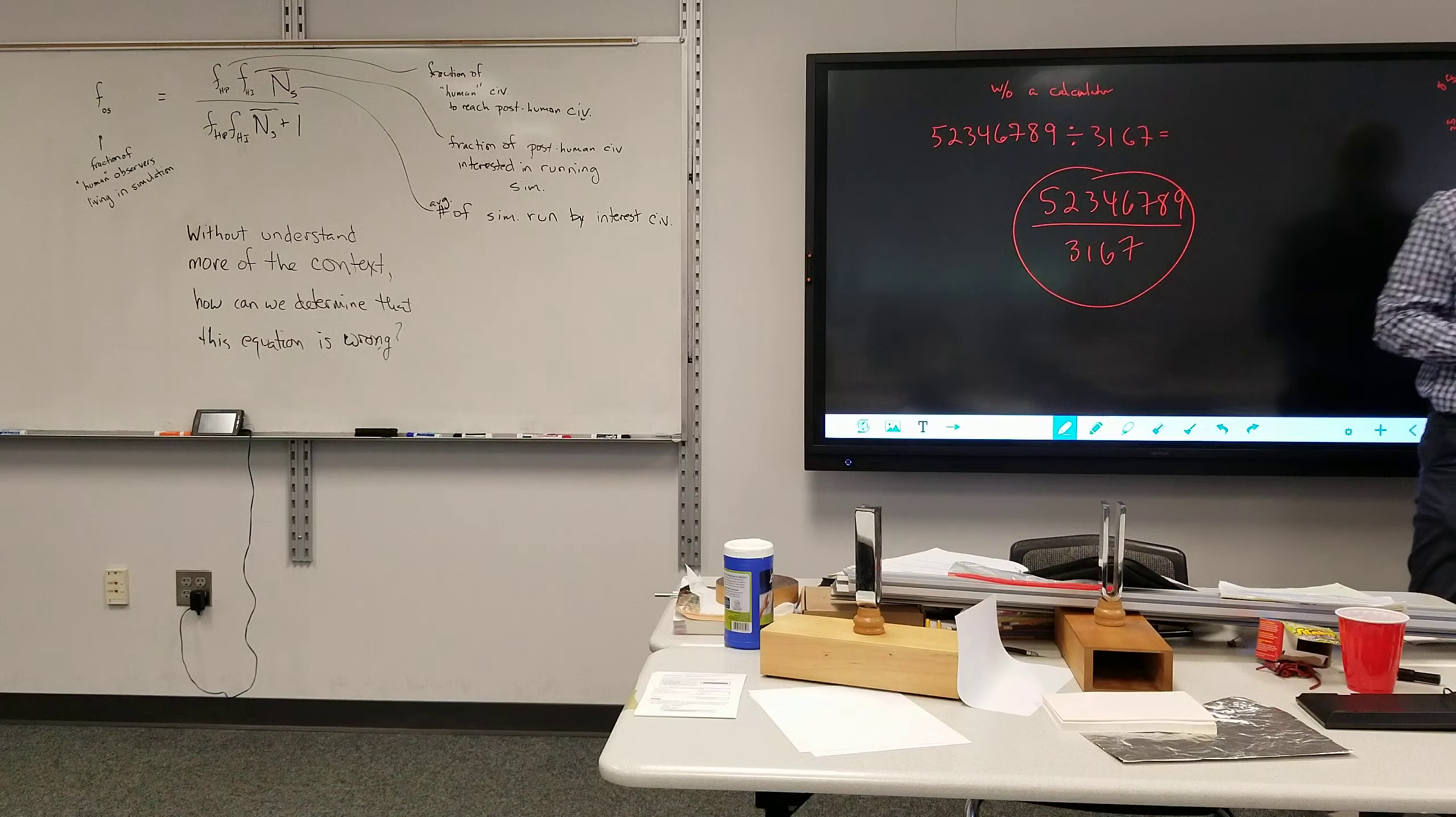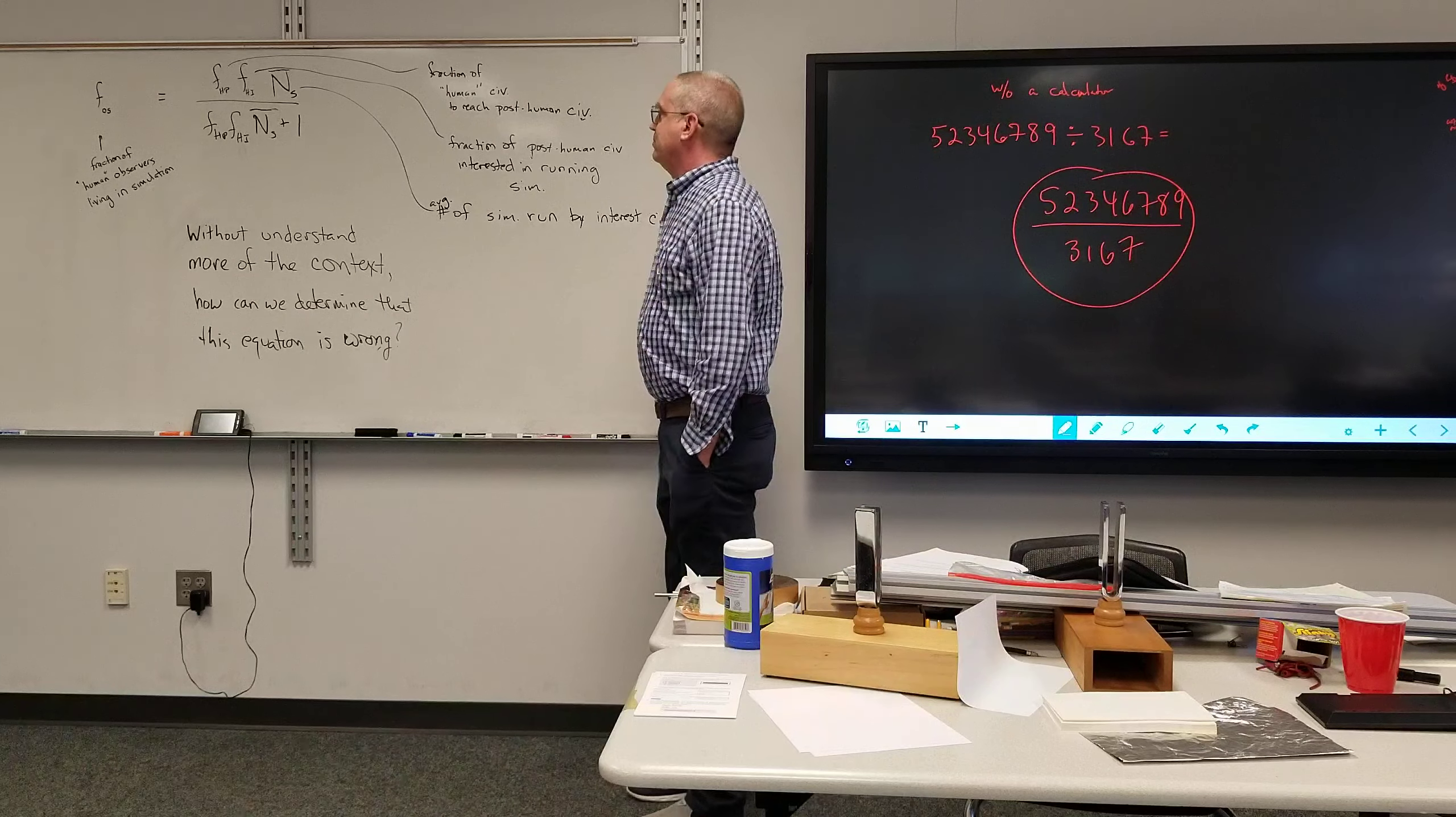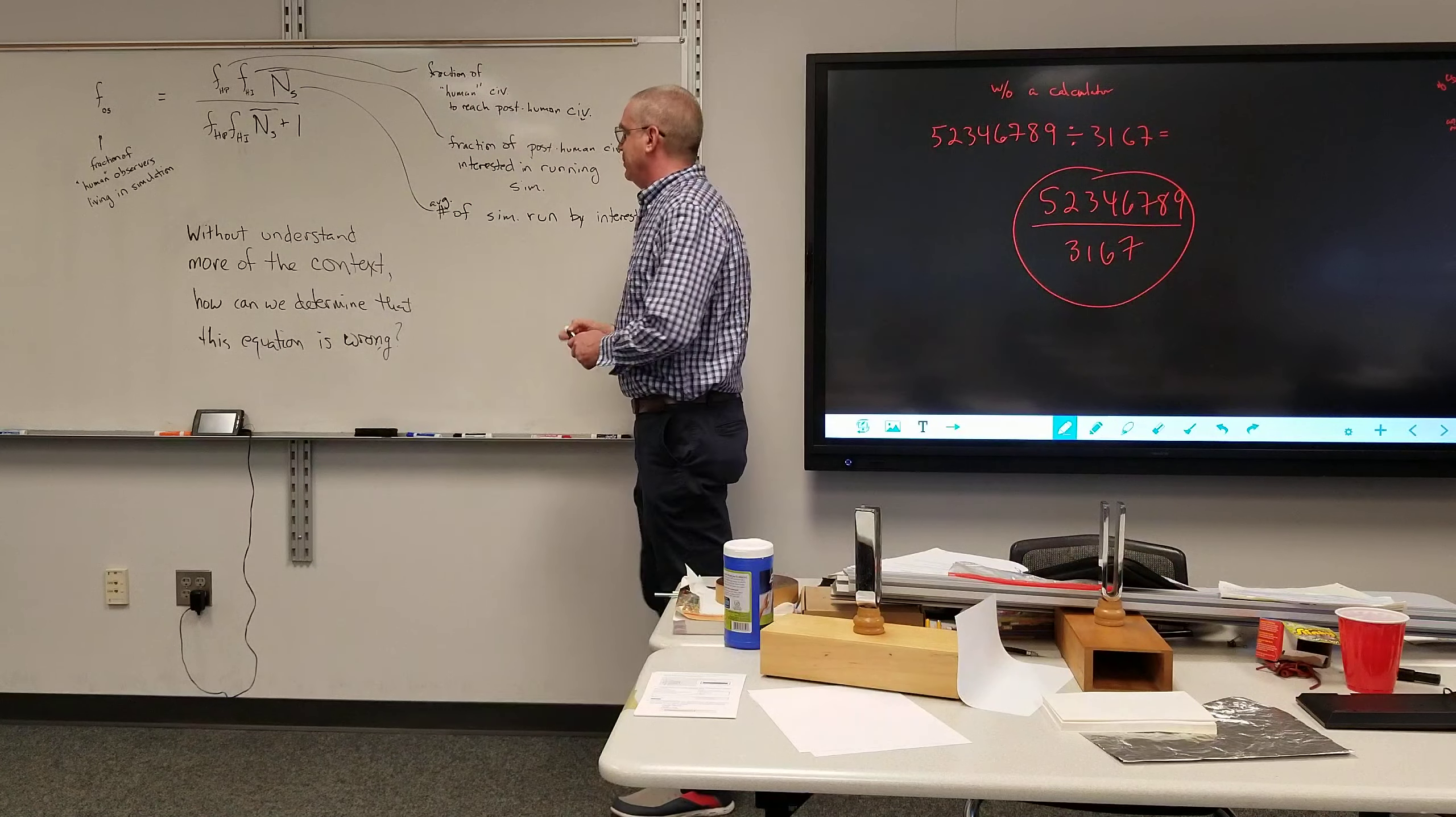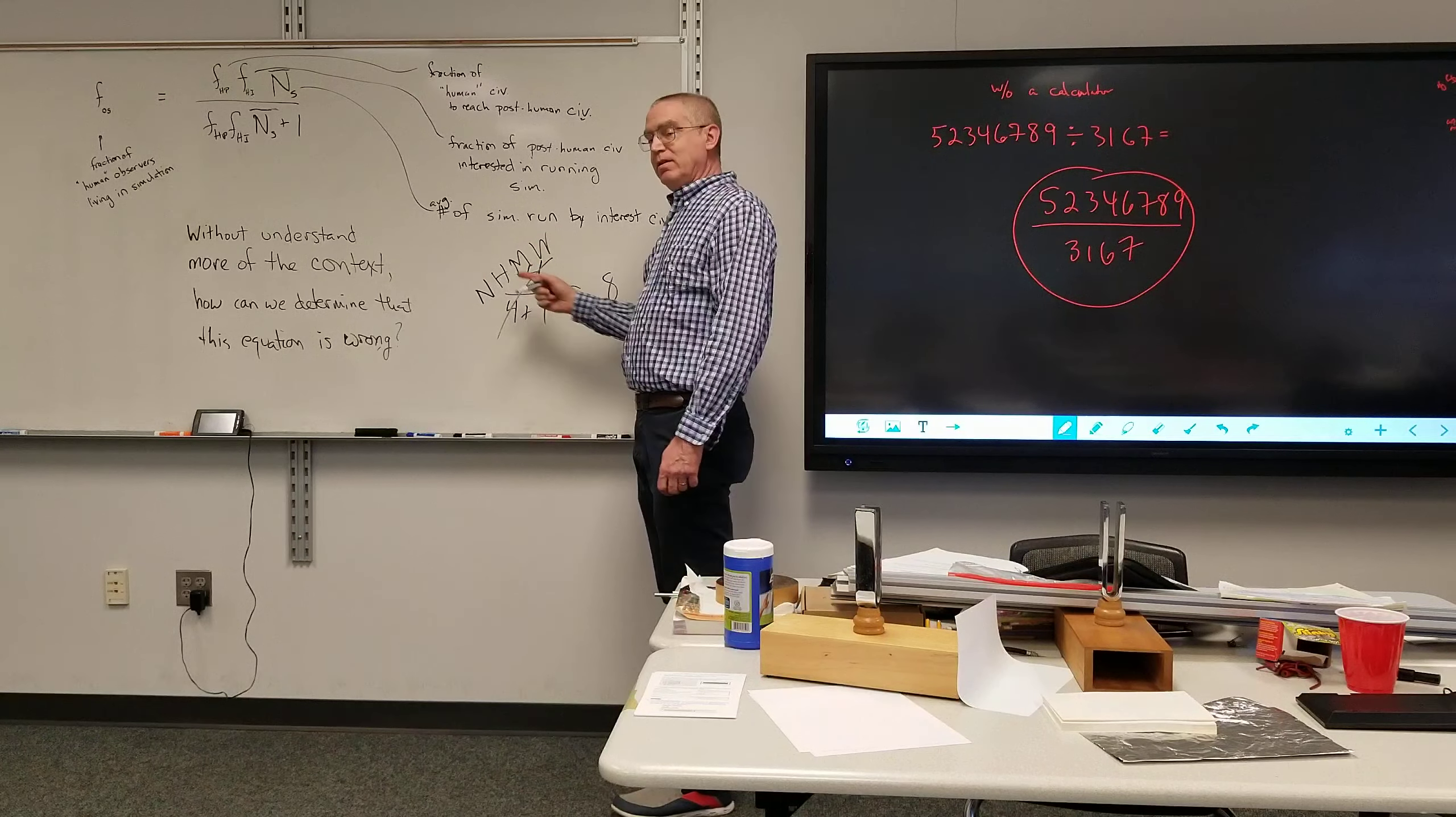Alright, so over there, the one that I've had on the board a little bit longer, that equation is not a physics equation, and this will be the last time you see it, potentially. Though, what's wrong with it? So if it's the fraction of human civilization to reach post-human, it's those things over themselves, which doesn't cancel each other out, and then it's just the fraction of human beings observed living in the civilization is just one? That plus one doesn't allow you to do it. Four over four plus one is 0.8. That's illegitimate math.